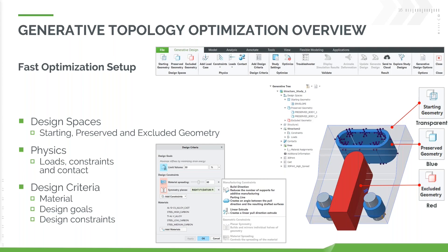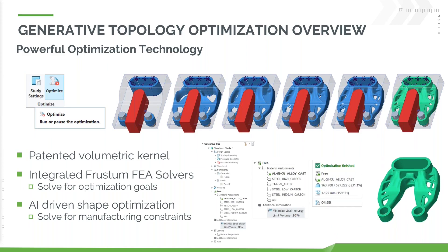We can go and define all of our physics — our loads, constraints, contact, and the like. Then we define our design criteria, as you can see here, where we define our goals, constraints, and everything else. We then go off and run the optimization. This is using PTC's own kernel — PTC had acquired Frustum back in 2018, and that acquisition has evolved into Creo GTO. That is the engine driving this, and it basically solves for the optimization goals and comes up with the best shape based on your manufacturing constraints.